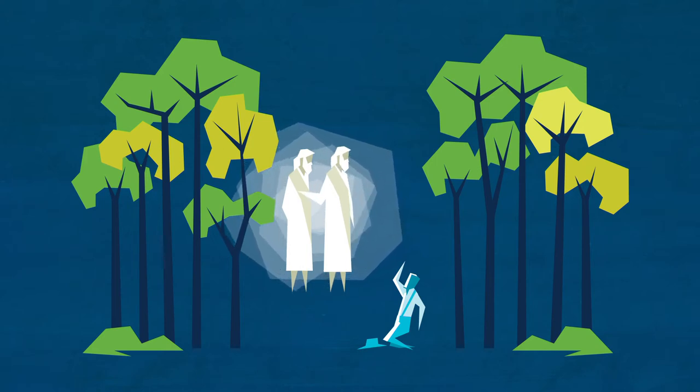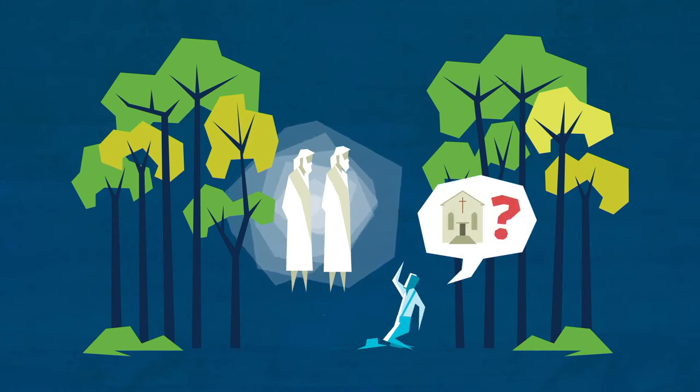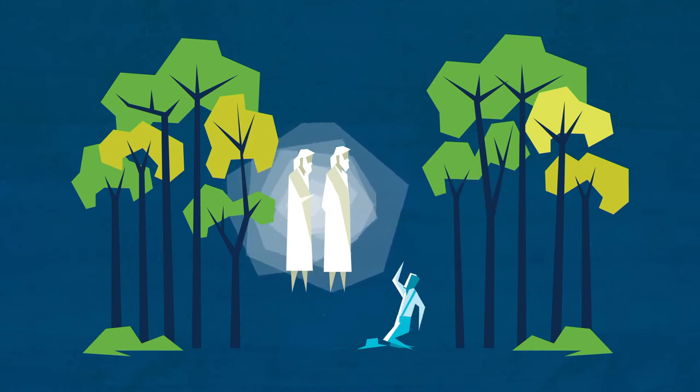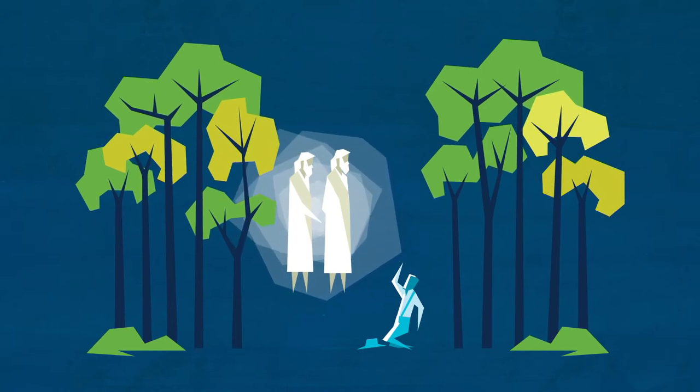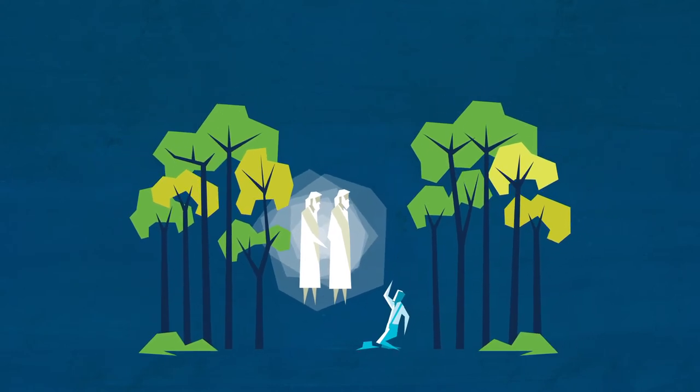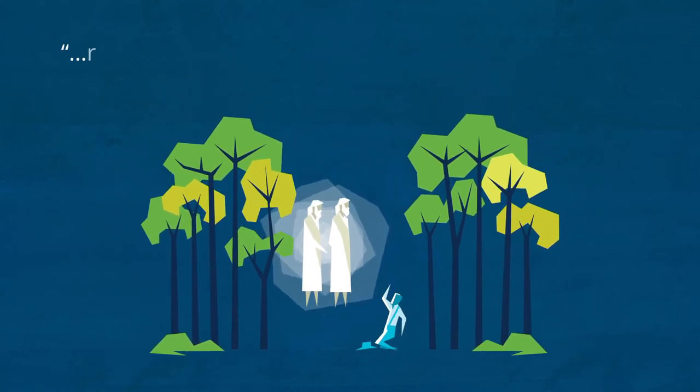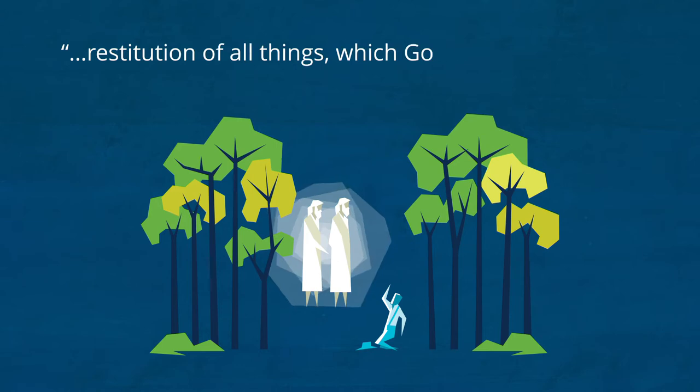Hear him. Joseph asked the Lord which church he should join. The Lord instructed him not to join any of them. That experience, which came to be known as the first vision, set in motion what the apostle Peter referred to as the restitution of all things. That is, Jesus Christ would call Joseph to restore his true church to the earth.